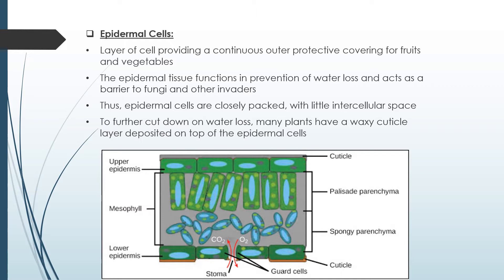Epidermal cells are closely packed with little intercellular space to cut down on water losses. Many plants have a waxy cuticle layer deposited on top of the epidermal cells. As seen in the diagram, the cuticle layer is followed by the upper epidermis.